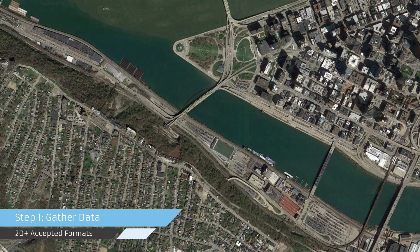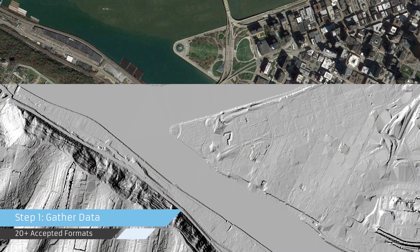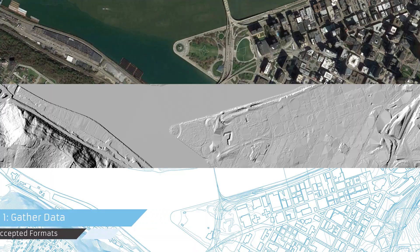The TerraTools workflow can be broken into four steps. Step 1: gather geographic data for your area of interest, such as satellite imagery, digital elevation models, and vector data.